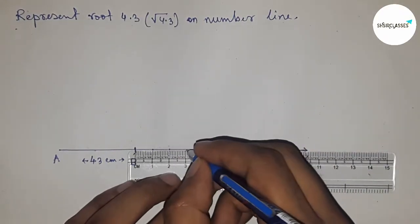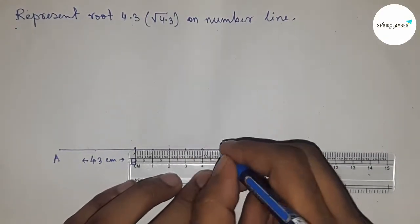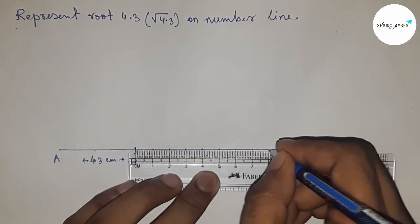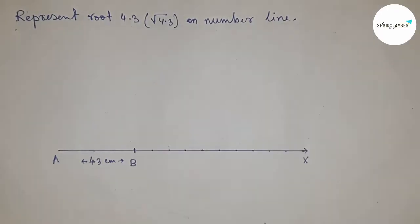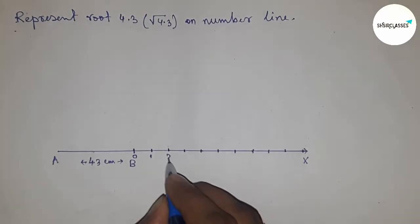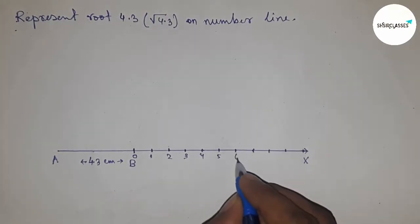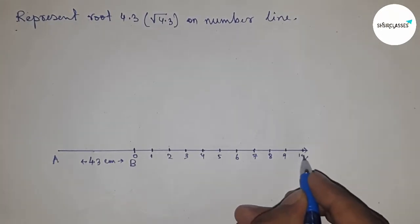Marking all the numbers by scale this way. So this is zero, one, two, three, four, five, six, seven, eight, nine, and so on. This is point C.